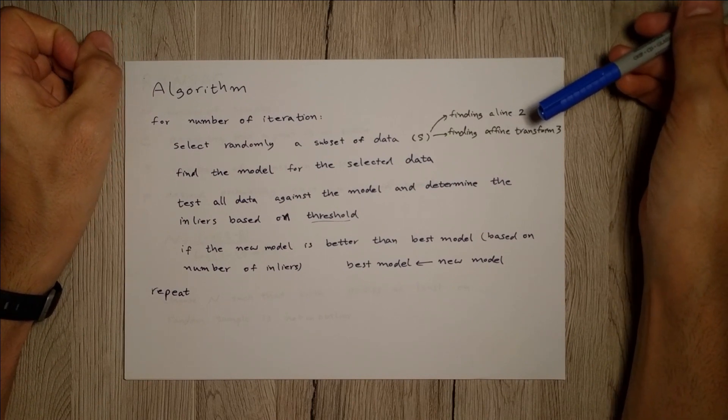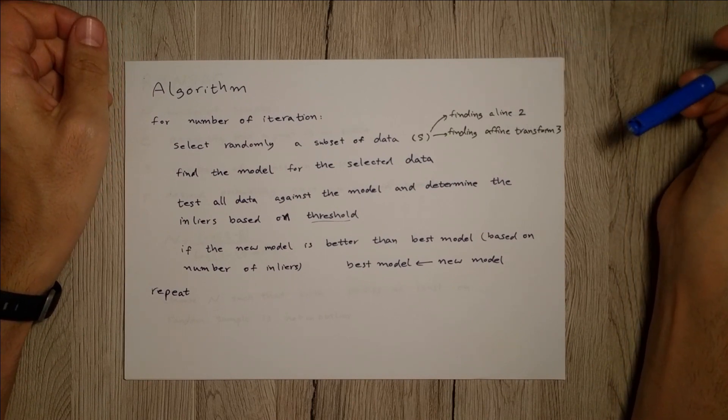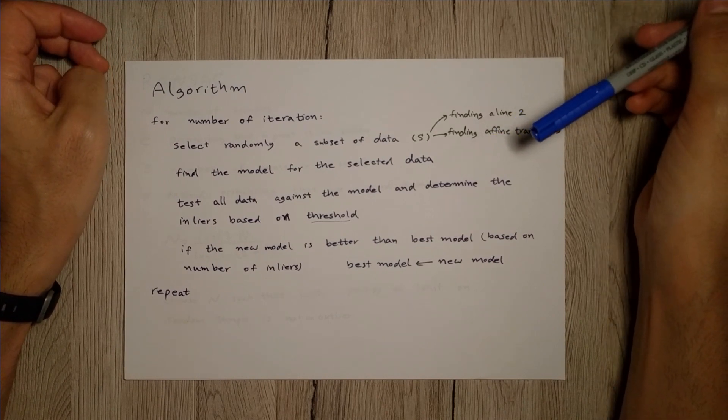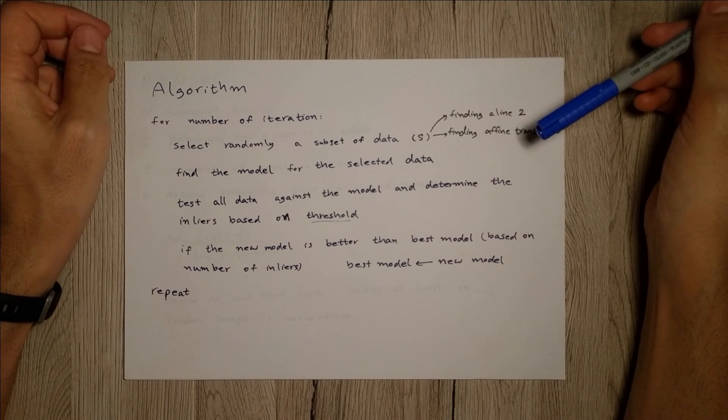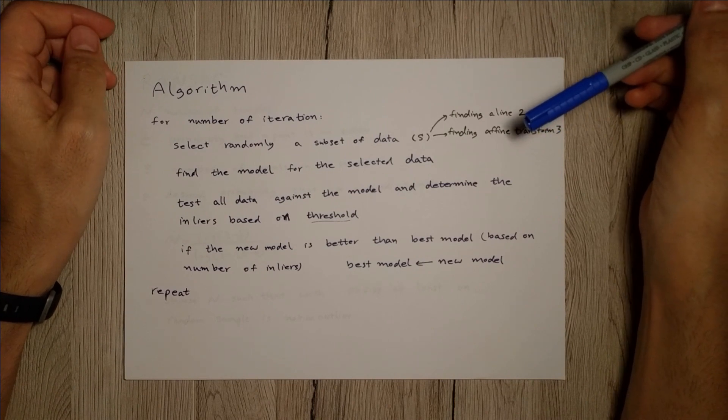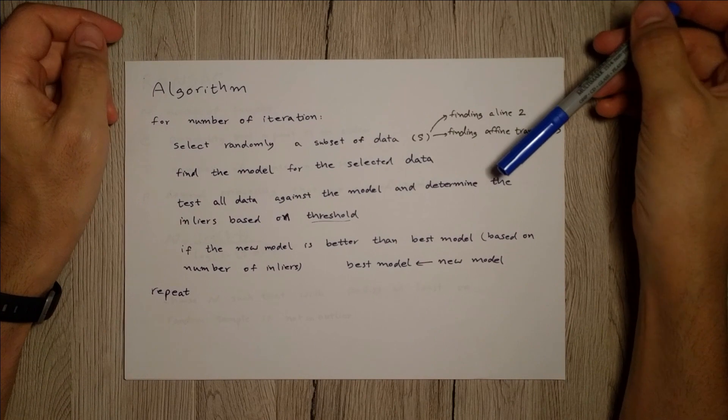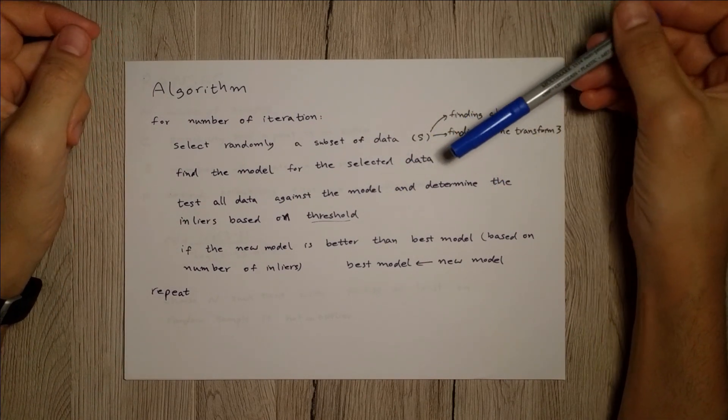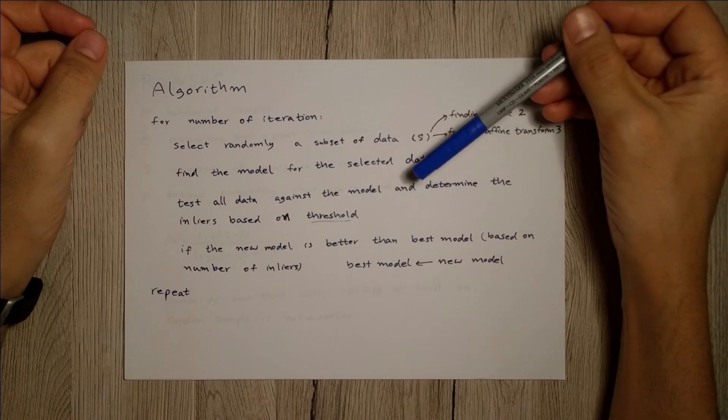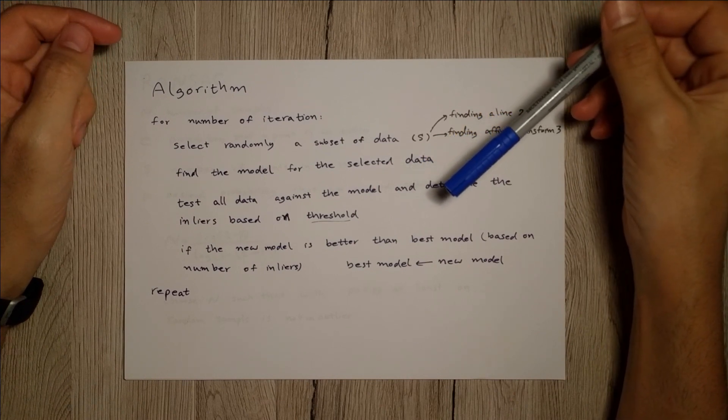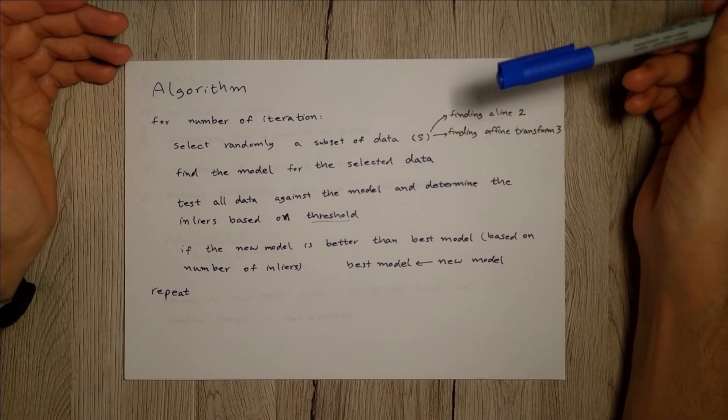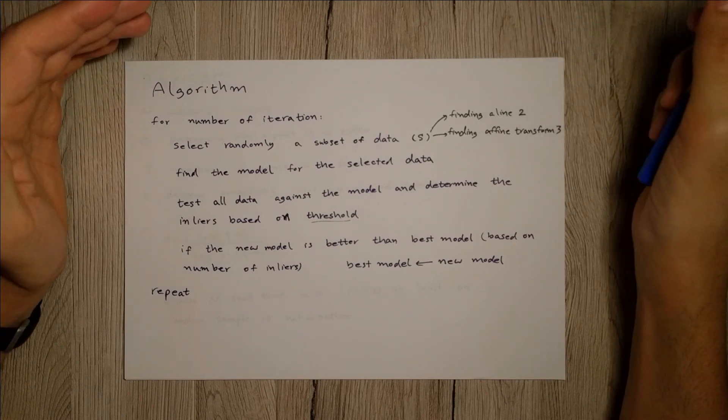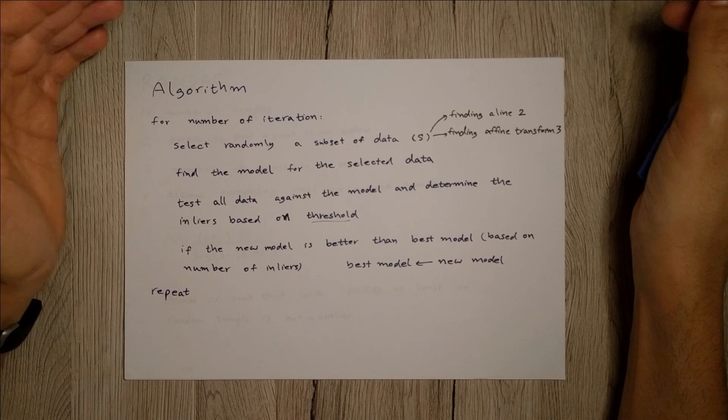Then you will test all of your data against this model and check if there are inliers or not. In this algorithm, you have to specify a threshold that if the distance between the given data and the model is less than the threshold, then it's an inlier.